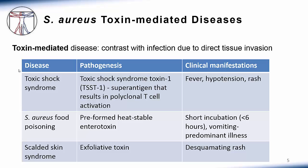A third syndrome is staph scalded skin syndrome, which is caused by exfoliative toxin and leads to a desquamating rash. These are related to staph aureus toxins, as opposed to diseases related to direct tissue invasion by staph aureus bacteria.